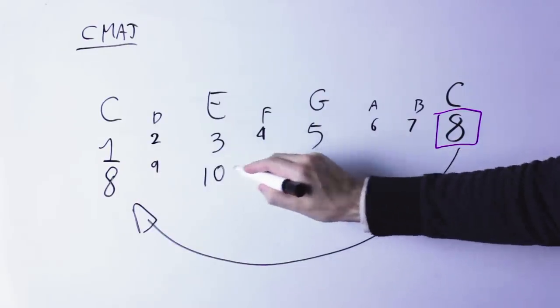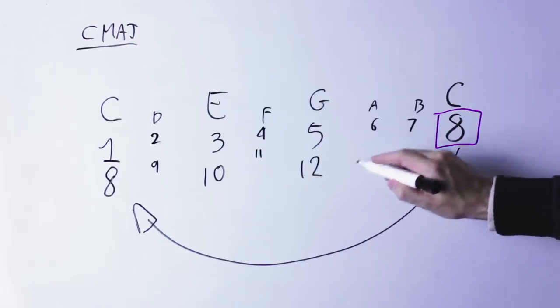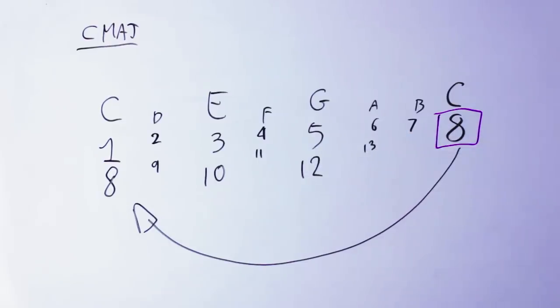and then if we keep counting, under the E we should write a 10, and under the G we should write a 12. This higher number here just means that the notes are supposed to be at the higher octave. Nothing strange.